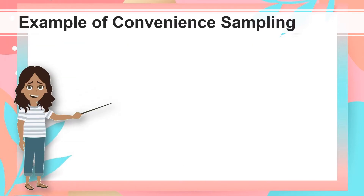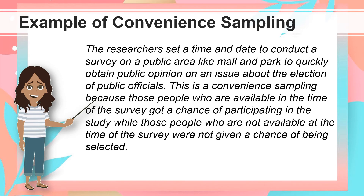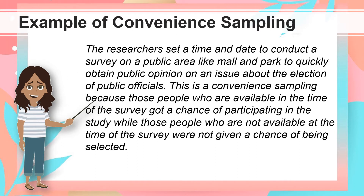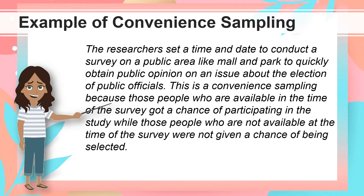Let's take a look at this example of Convenience Sampling. The researcher set a time and date to conduct a survey in a public area like a mall and park to quickly obtain public opinion on an issue about the election of public officials. This is Convenience Sampling because those people who were available at the time of the survey got a chance of participating in the study, while those who were not available were not given the chance of being selected.